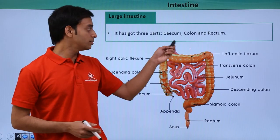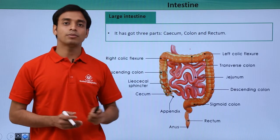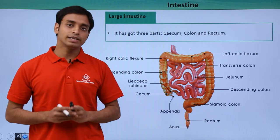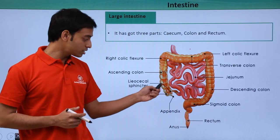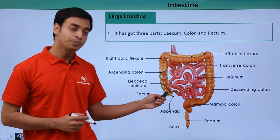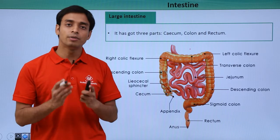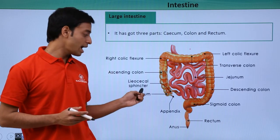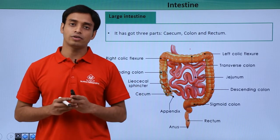Let us discuss each part. The cecum is the starting portion of the large intestine. The cecum ends with the vermiform appendix. The vermiform appendix and the cecum are known as vestigial organs of our body.